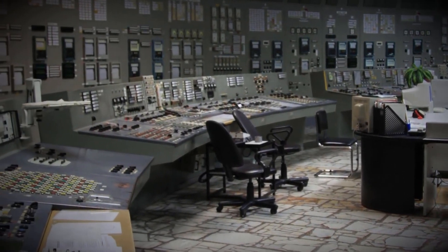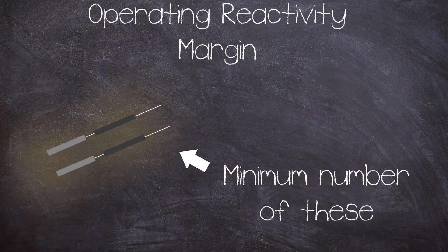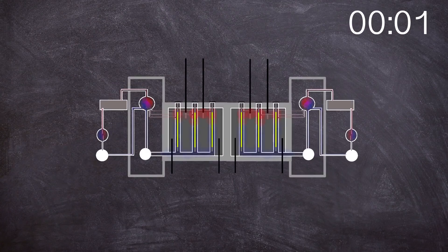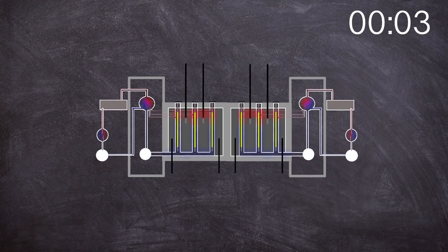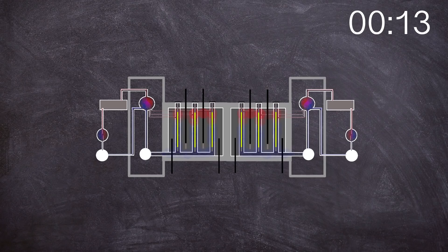The ORM is the number of equivalent control rods of nominal worth remaining in the core. The total time required for a scram or insertion of the emergency control rods into the core when starting from the upper limit stop switches was around 18 seconds, which was relatively slow, but this was due to the size of the control rod channels and the fact that the coolant had to be pushed out of the way.